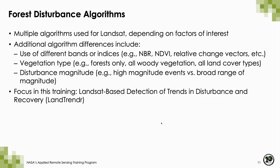Depending on your question or study area, you may want to use one algorithm versus another. Some algorithms are refined further to meet the needs of a specific region of interest. Some algorithms use different bands or indices such as NDVI, the normalized difference vegetation index, or NBR, the normalized burn ratio, or they can simply use specific bands to analyze spectral properties. Some algorithms work better primarily in forests, others in all vegetation types including shrublands or grasslands. Some have higher accuracy for high-magnitude events like intense wildfires, while others detect subtle changes such as those from insect disease.